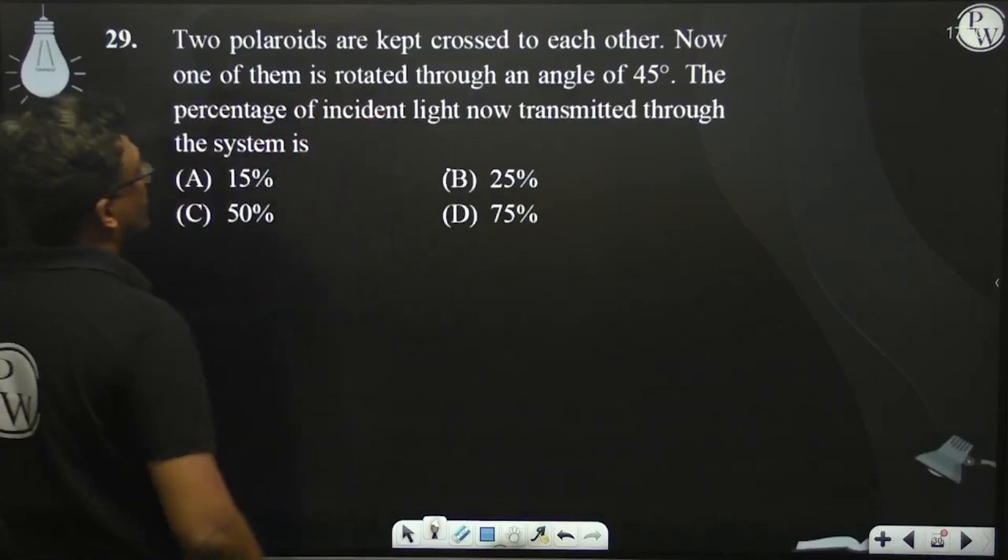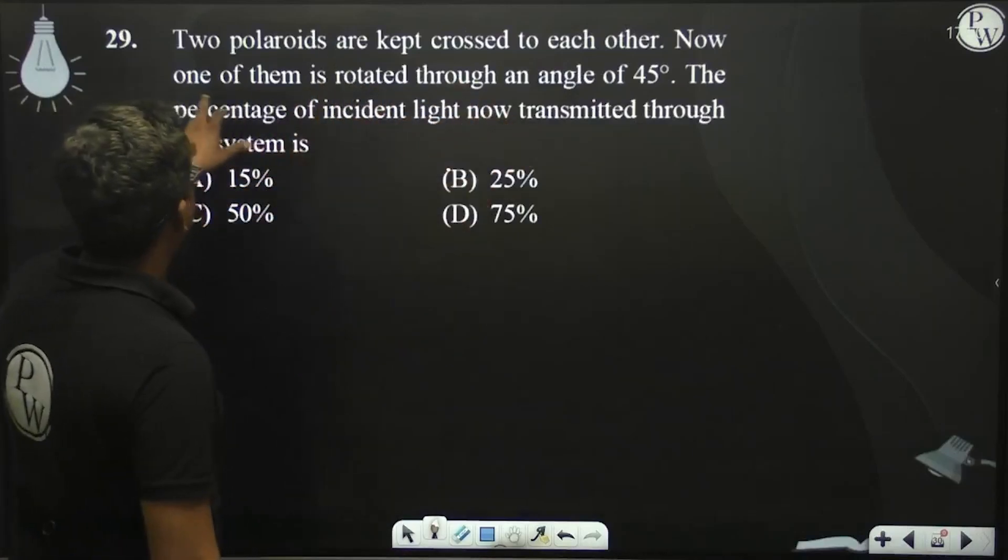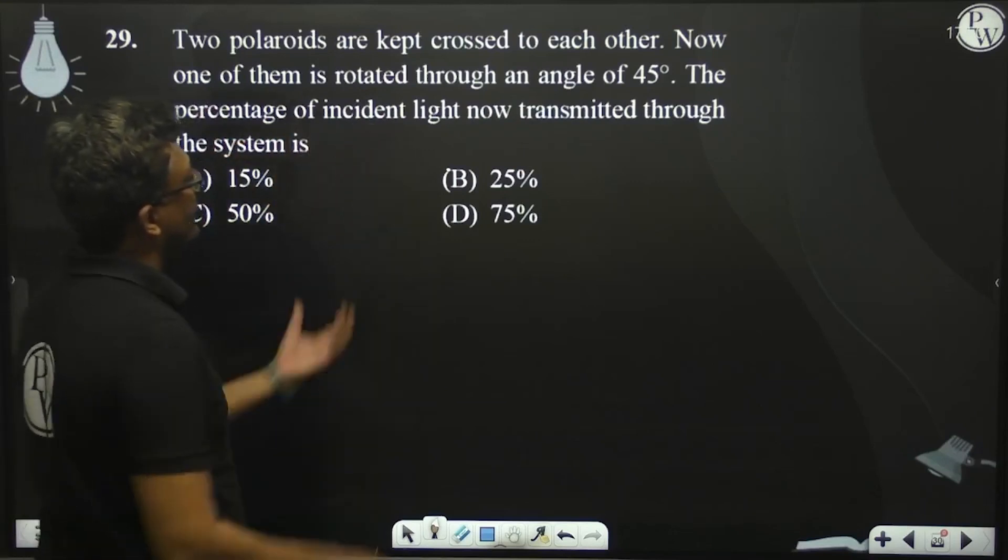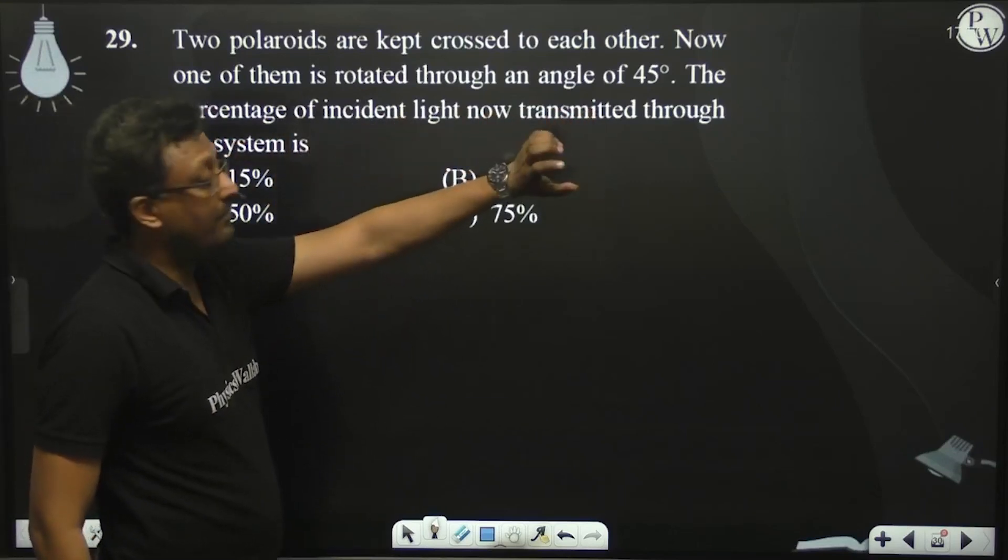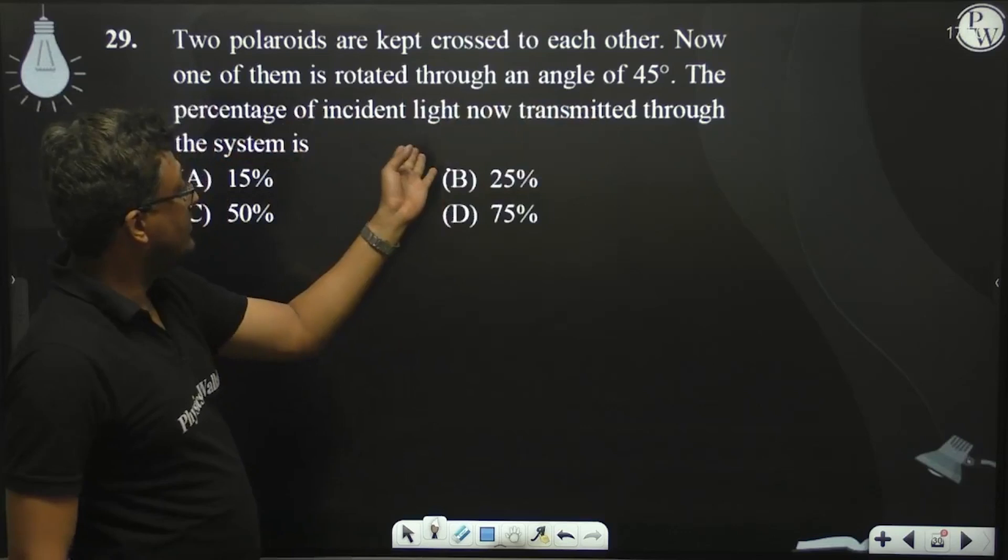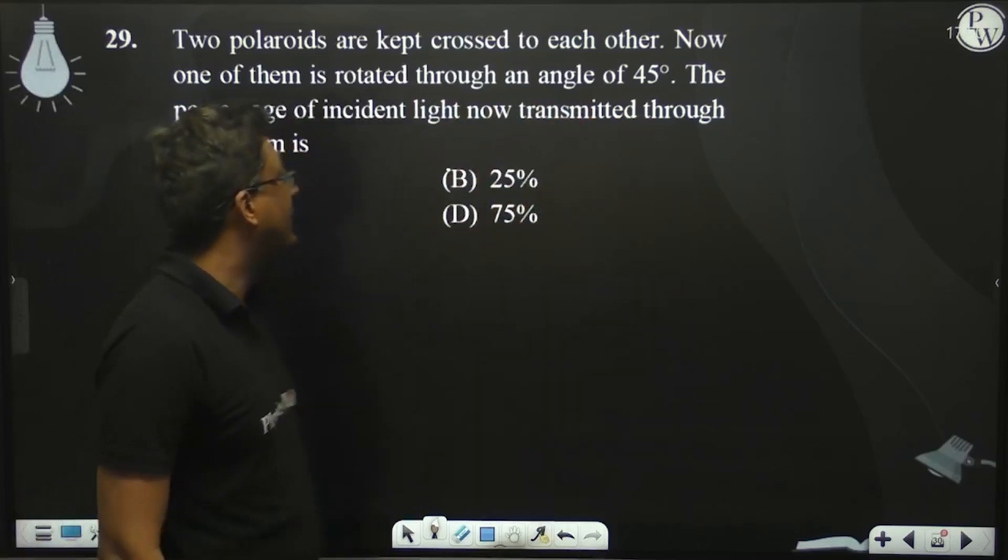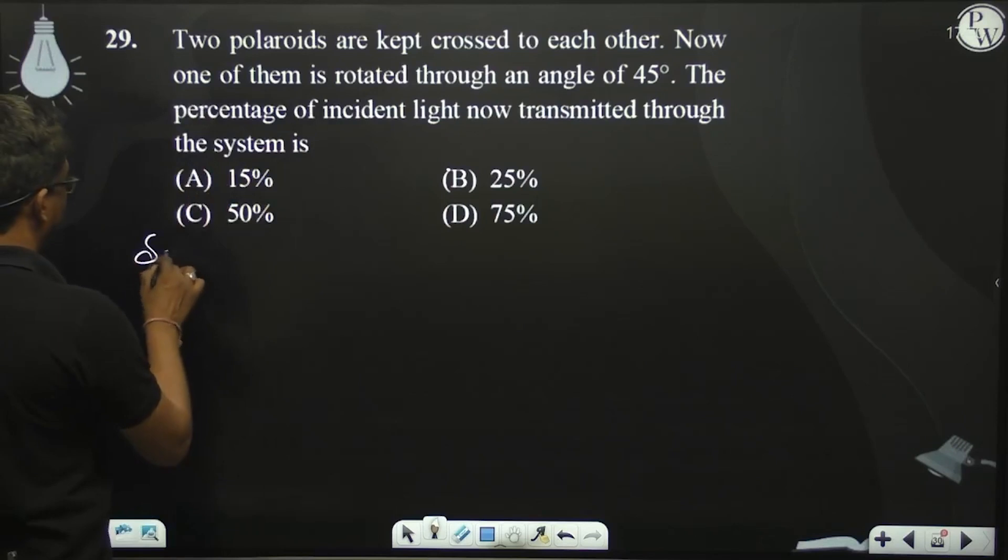Two polaroids are kept crossed to each other. Now one of them is rotated through an angle of 45 degrees. What is the percentage of incident light now transmitted through the system? The question asks for the percentage.